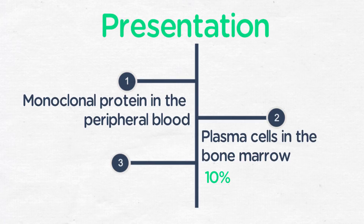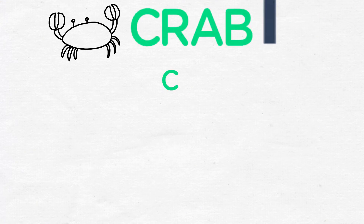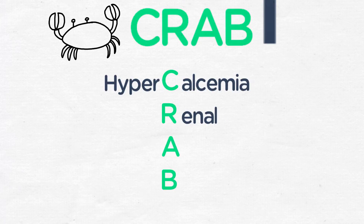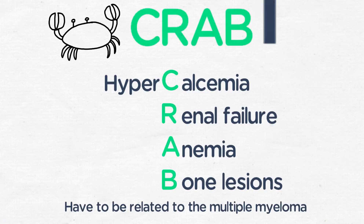Patients with multiple myeloma have to have symptomatic disease or end organ damage, and we define this by something called CRAB criteria. C stands for hypercalcemia, R is for renal failure, A is for anemia, and B is bone lesions. These have to be related to the multiple myeloma. If someone has anemia because of iron deficiency or renal failure because of hypertension or diabetes, this would not fulfill the criteria of multiple myeloma.